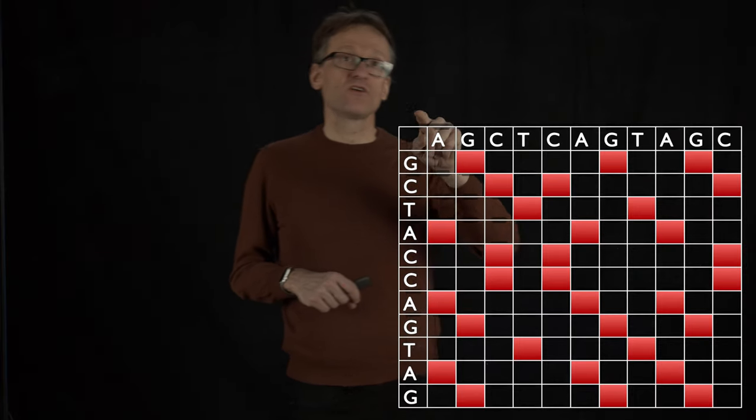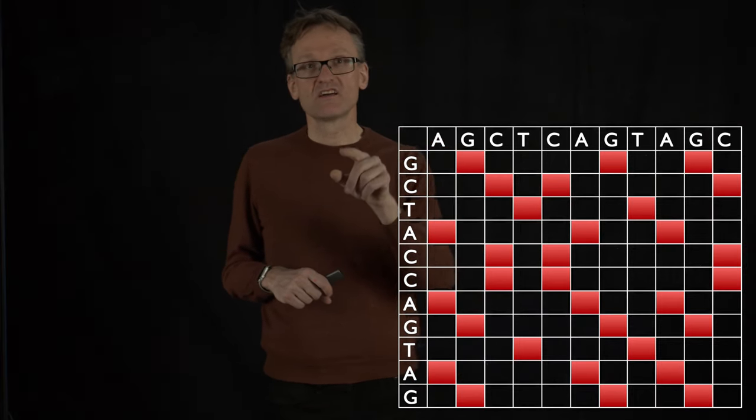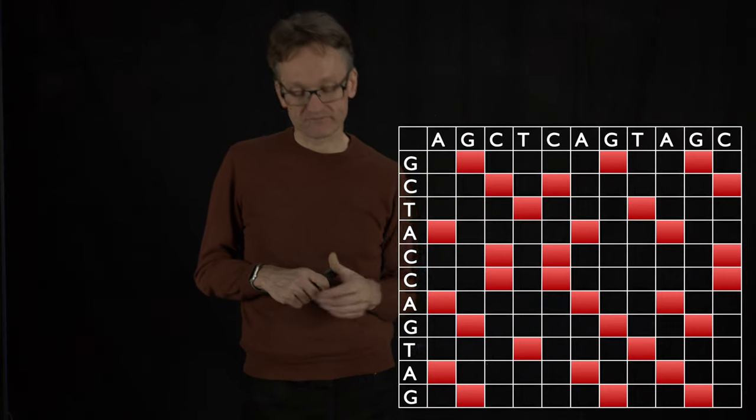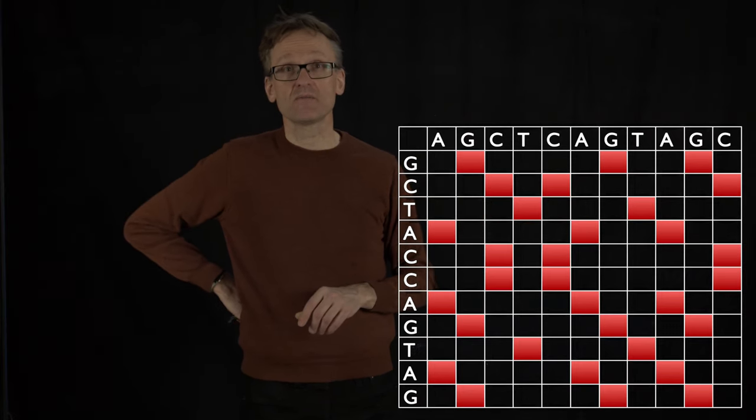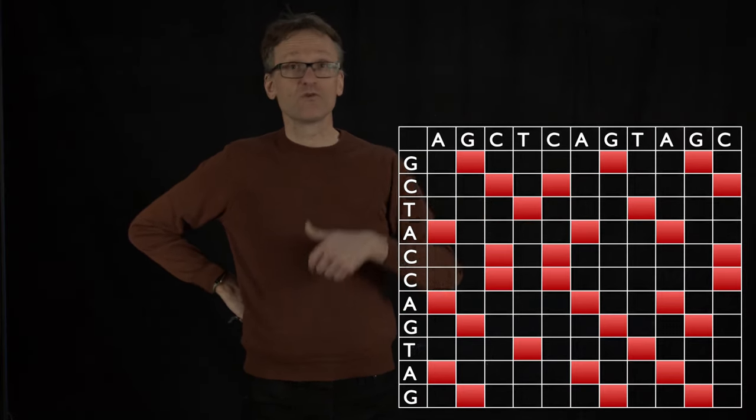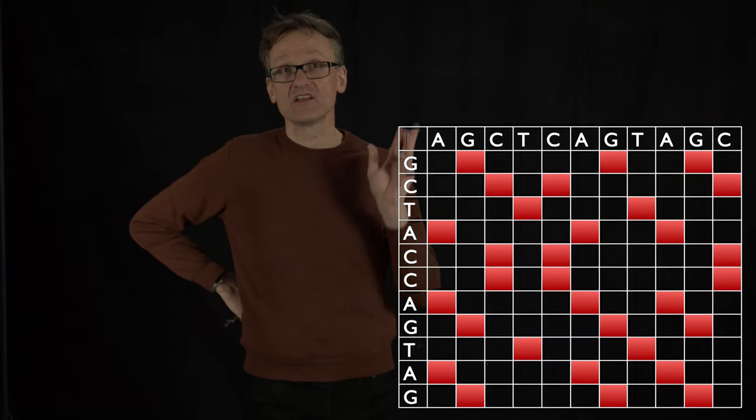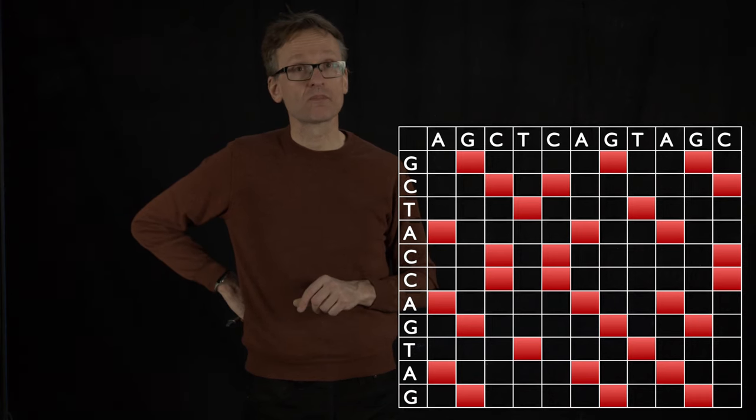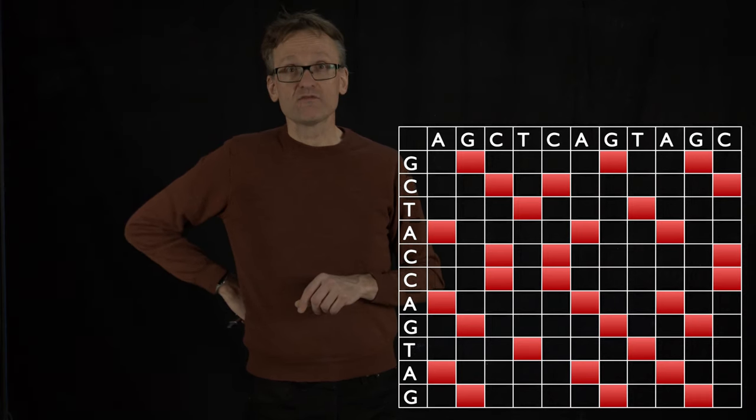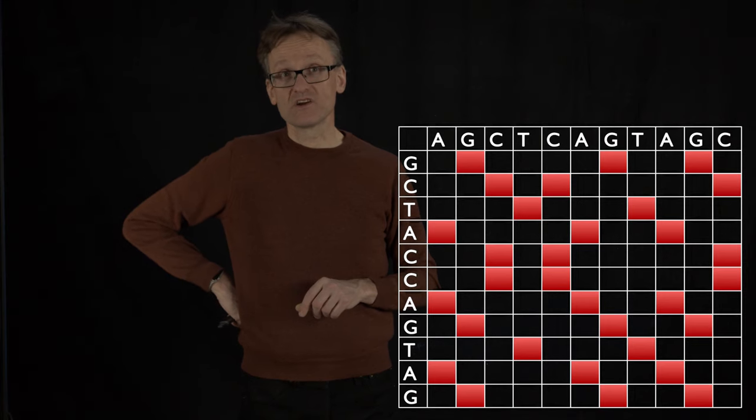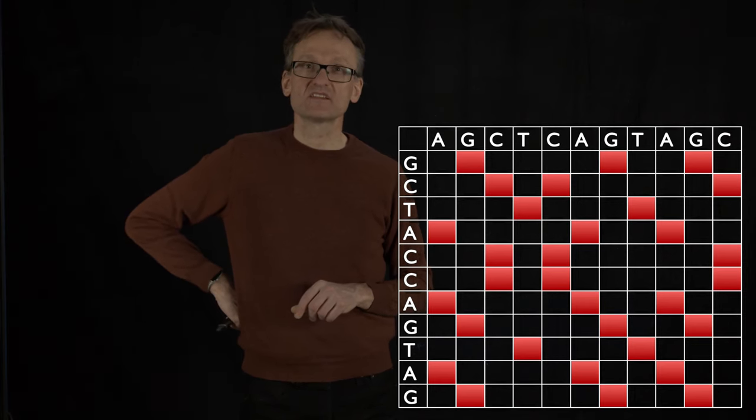If I have bases on rows and columns here, I can mark this so that I put a red square here, or think of this giving a plus one score if they are identical. And if they are not identical, I give them zero. Already for these random sequences that I drew here, actually they're not entirely random, but this is a bit of a mess.